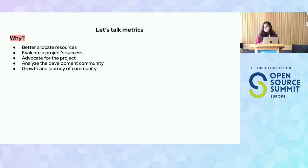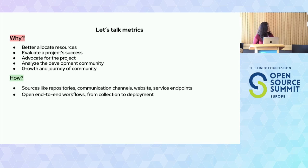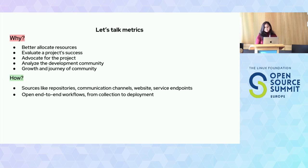Metrics can also help with analyzing the whole software development community, and finally assess the growth of an open source project and its associated community. So how do we calculate these metrics? Sources like GitHub repositories, communication channels, and the data stored in them — like user traffic, commits, issues, PRs, the code itself — all of this can be used to derive these metrics. And most communities are already doing this in some form and already have some kind of dashboards which track their community health.